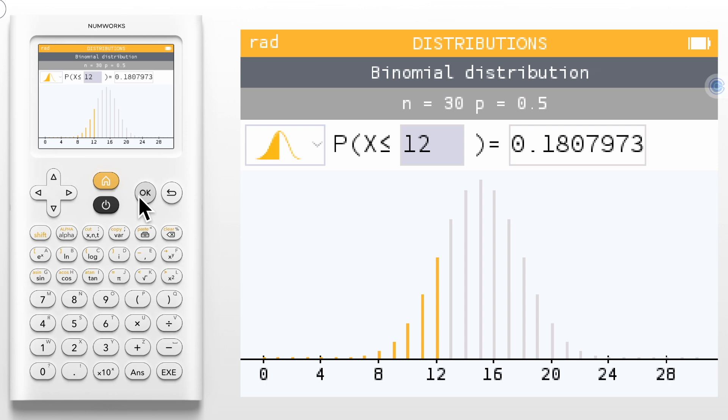What if we don't want to find the probability that it is less than or equal to a value? Great question! Navigate to the top left icon and click OK. Here we can change our probability statement to be less than or equal to, between two values, greater than or equal to, or simply equal to. Let's find the probability that X equals 12 by selecting the last option.